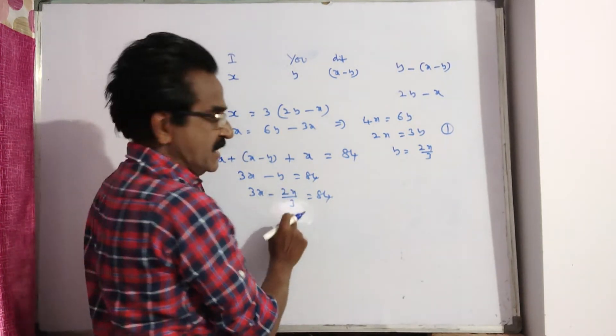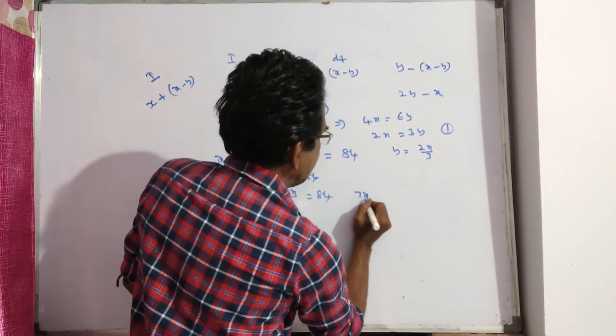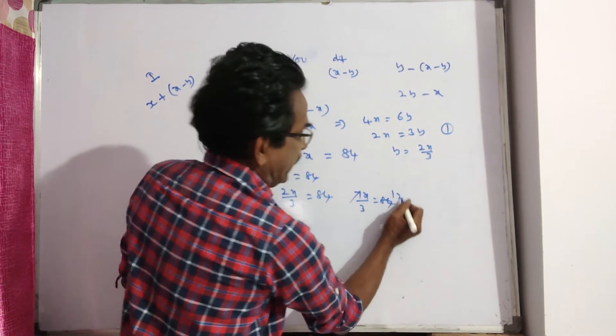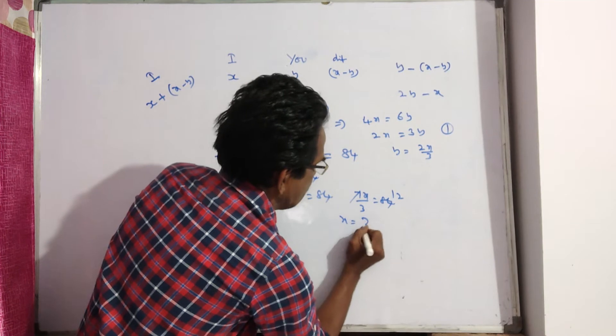3 times 3 is 9X minus 2X, that's 7X by 3. 7X by 3 is equal to 84. 7 times 12 is 84. X is equal to 36.